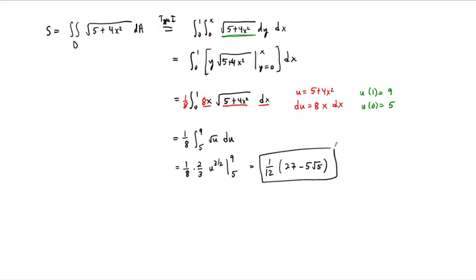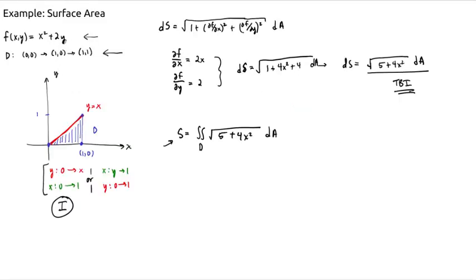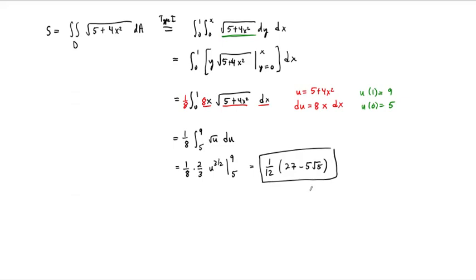All right, and so there is the surface area of the surface given by this function, x squared plus 2y. That's a piece of a paraboloid over this triangular region right here, triangular domain. So that's our answer. 1/12, 27 minus 5 root 5.